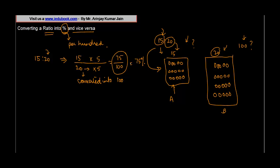Another way of dealing with this: you could have simply 15 upon 20 times 100, so 20 would have cancelled this 100 to give you 5, 5 times 15 will give you 75. This is method 2, the easier one.